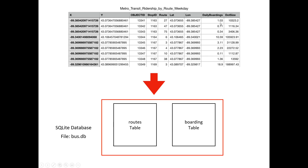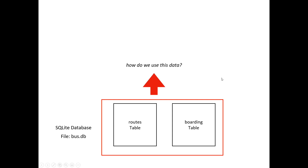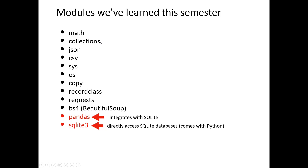We're going to be using some new modules. Quick review: some modules we've used this semester — math, collections (named tuple), JSON and CSV for loading files, sys for argv and command line operations, OS for path and checking if files exist, copies for copy and deep copy, record class for modifiable tuples, requests for HTML, beautiful soup coming up soon, and pandas for tabular data. The new one today is SQLite3, which will allow us to directly access SQL databases — it comes with Python and integrates with pandas.